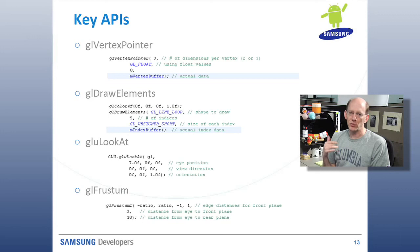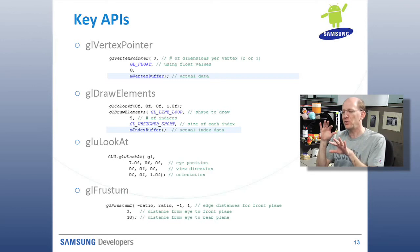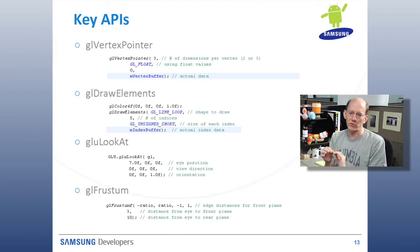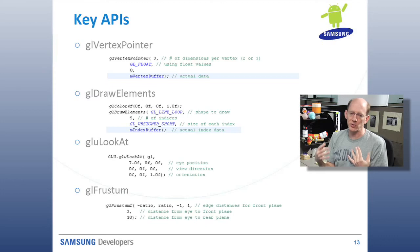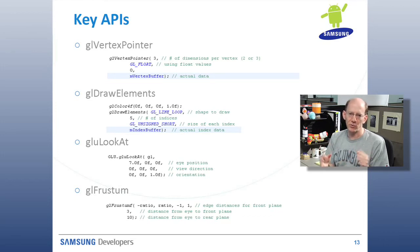Now we get into the parts that define the viewer's position and where they're looking. You do that using the gluLookAt call. The other calls started with GL for OpenGL, but GLU is an additional library that gives you some extra capabilities. With gluLookAt, you give it the eye position, the view direction, and the orientation — all those elements we talked about earlier.